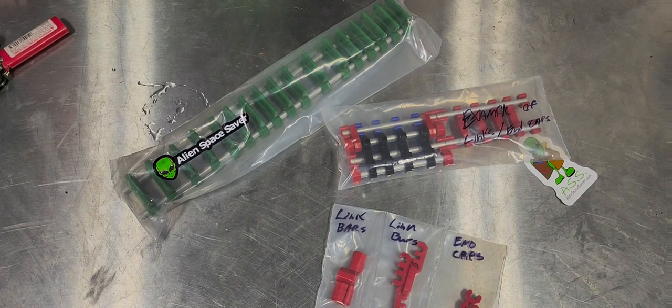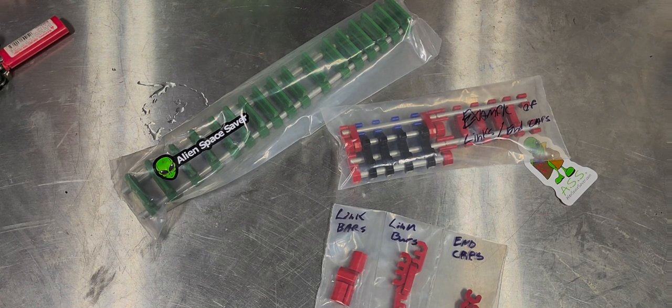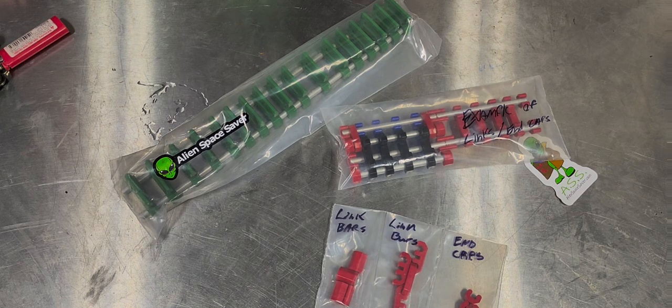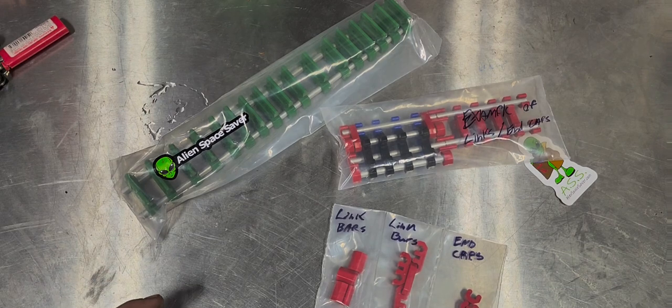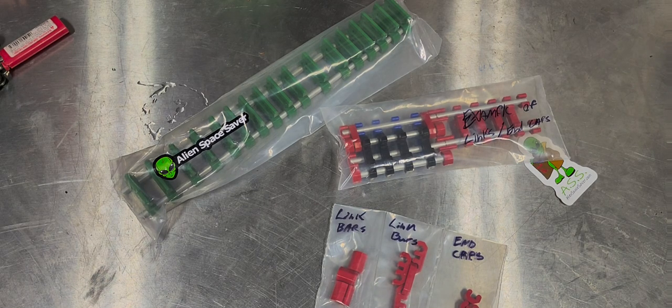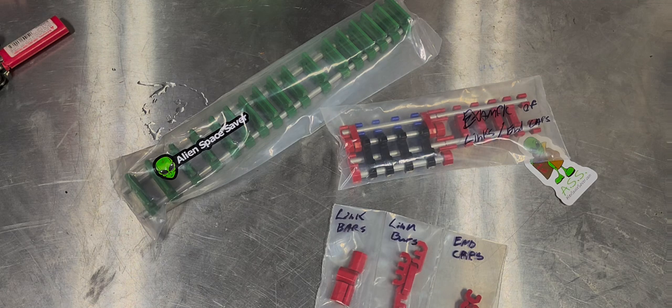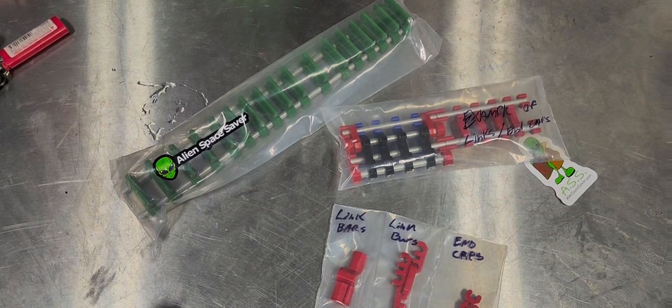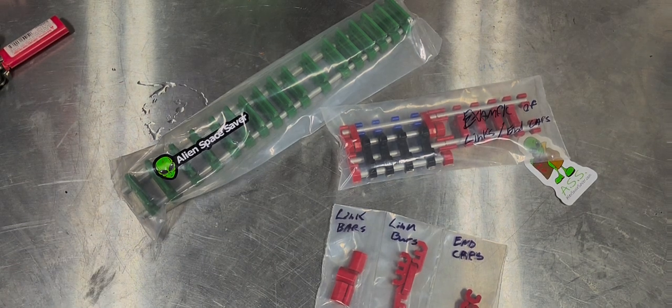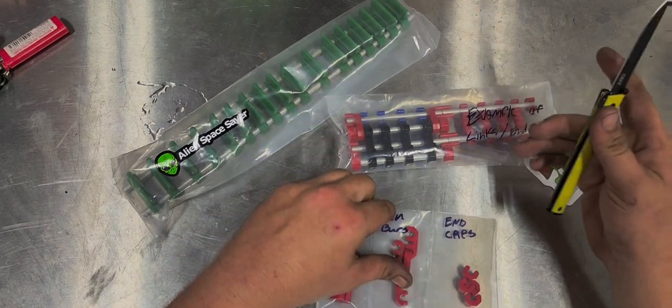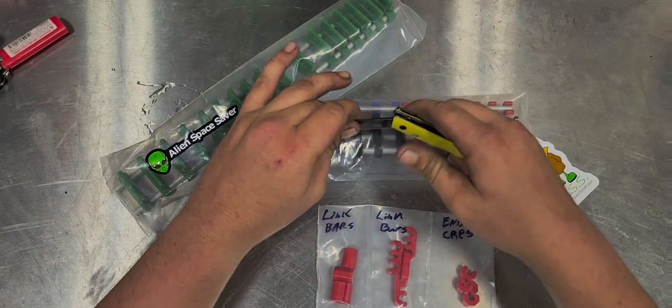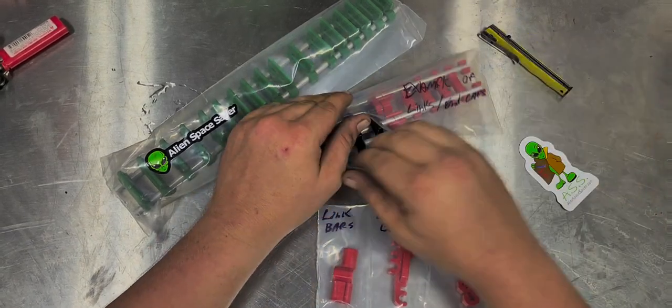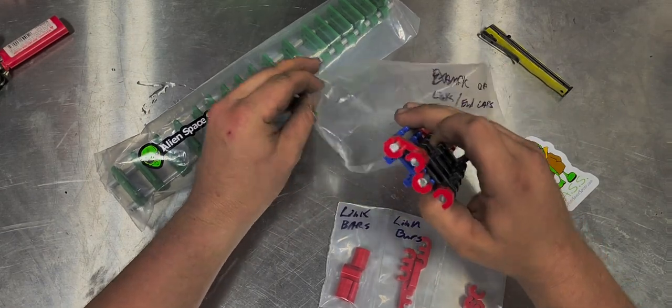If you have any Alien Space Saver products definitely let me know how you like them in the comments below. If you're not subscribed, definitely do that. We're gonna open these up, we're gonna open up the example first with my handy-dandy CRKT CEO pocket knife, those fun little things. I keep that one at work so I don't lose it.